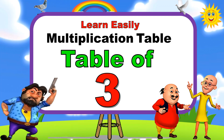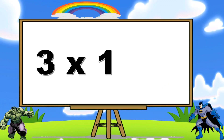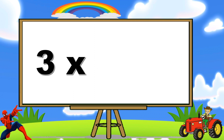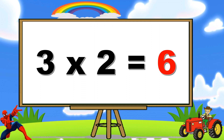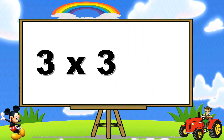Table of Three. Three, one's a three. Three, two's a six. Three, three's a nine.